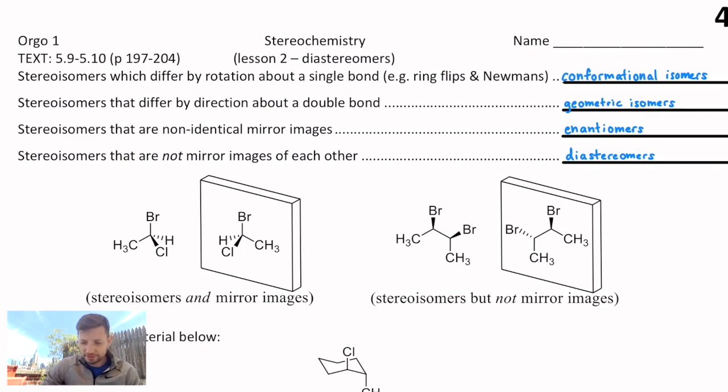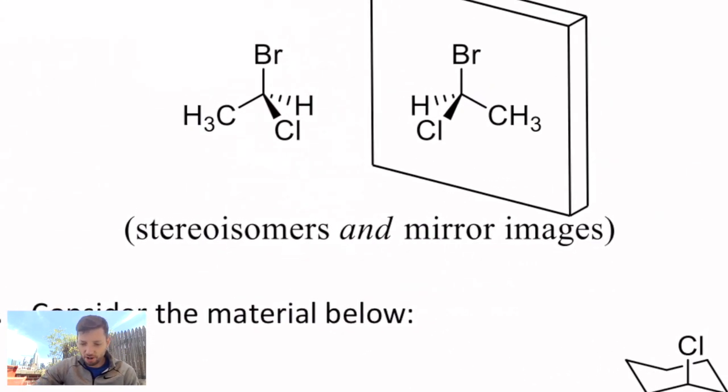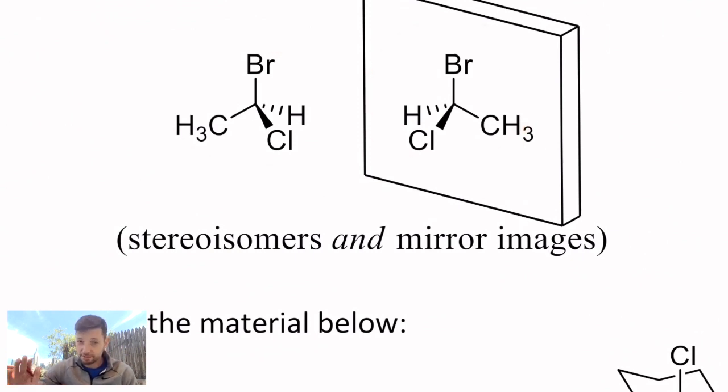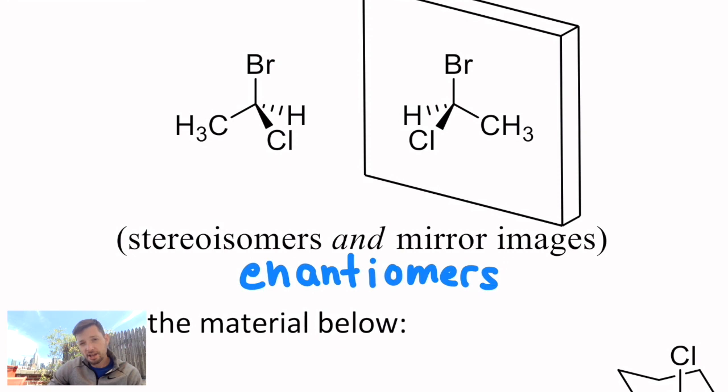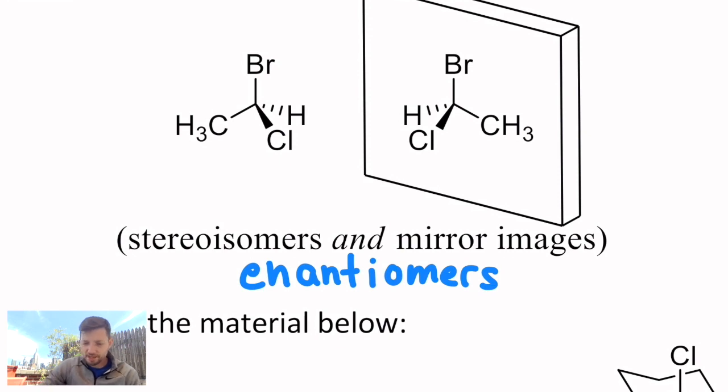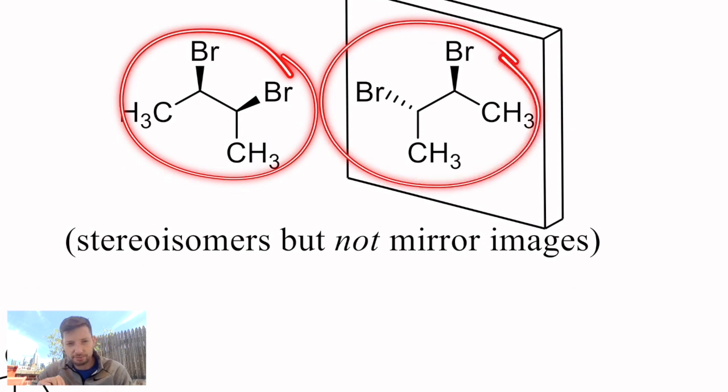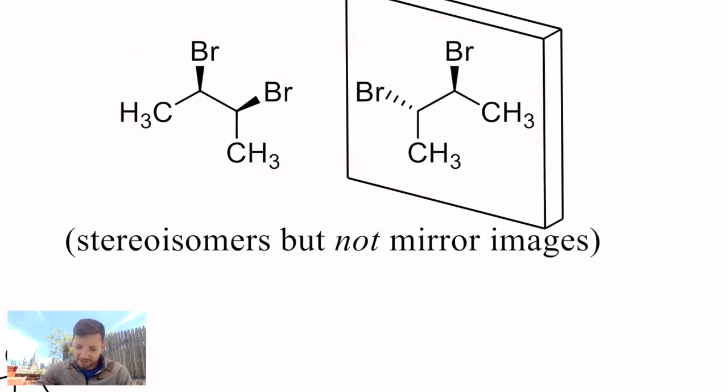So here's a picture that shows two molecules that are stereoisomers of each other and they are mirror images. Those are what enantiomers look like, but what if I have two molecules that are stereoisomers of each other, such as these 2,3-dibromobutane derivatives, but they're not mirror images? Well, we have to give them a new name.